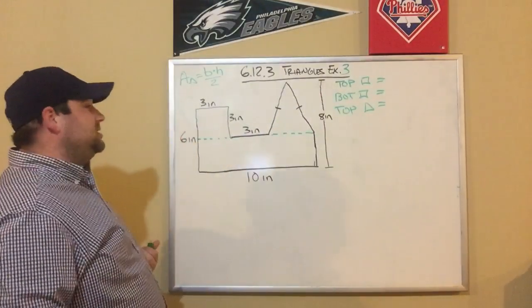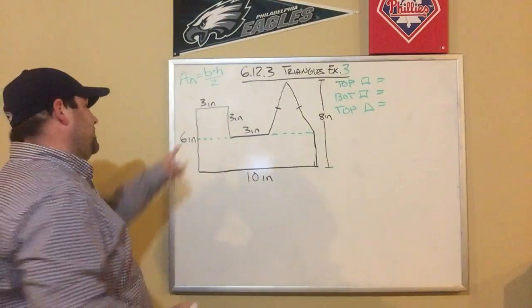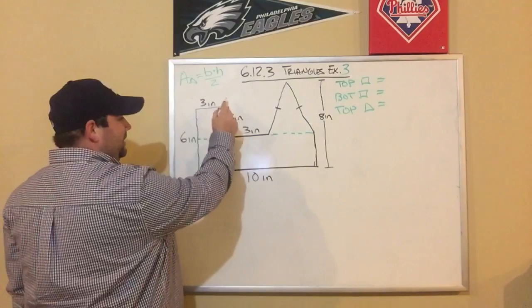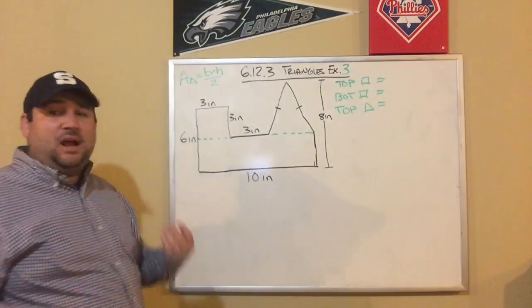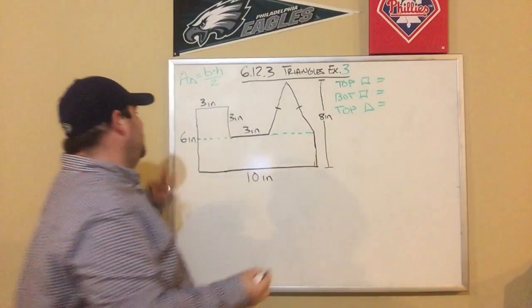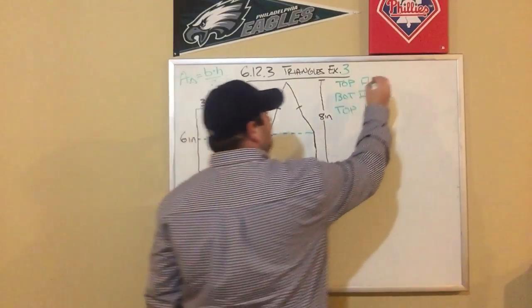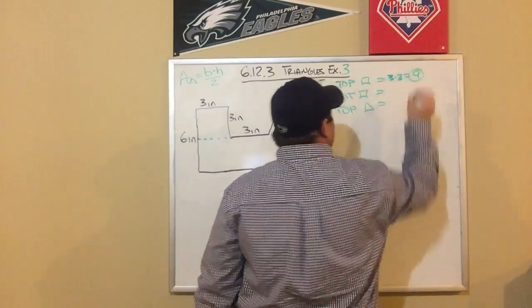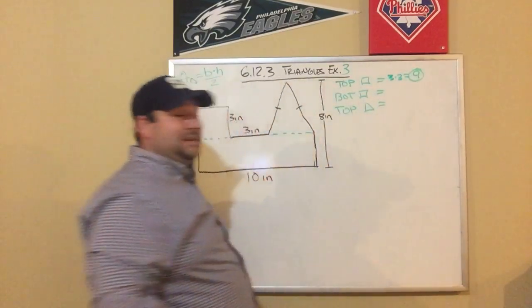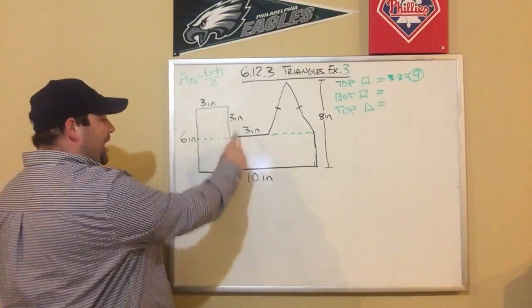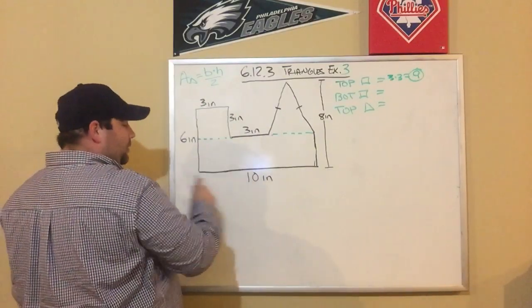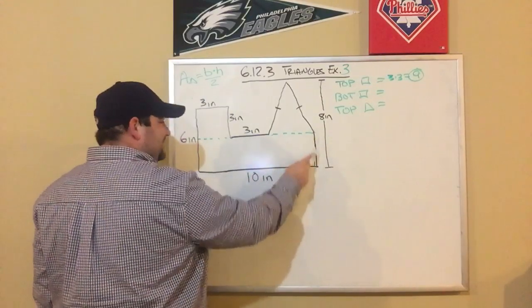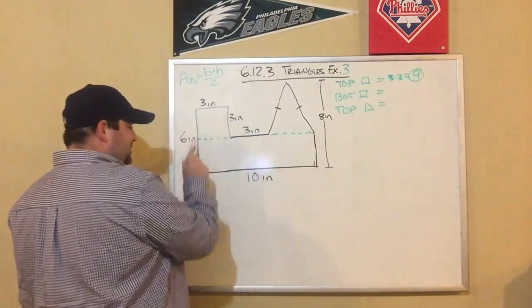Let's start with the top rectangle. I can see it has a length of 3 and a width of 3 — a base and height of 3 and 3. So this is easy: it's just 3 times 3, which is 9. So I've got the top rectangle area.